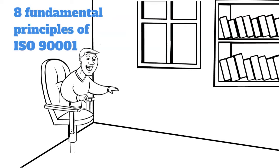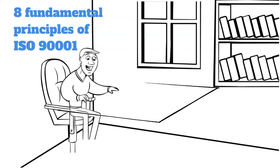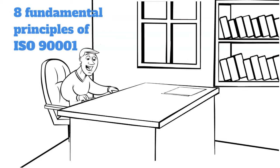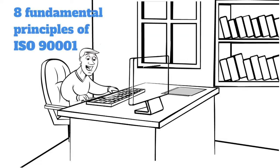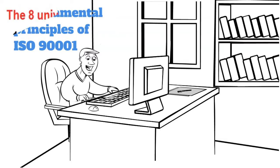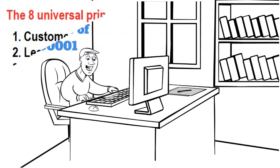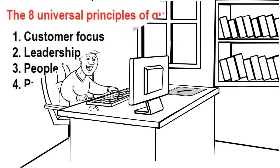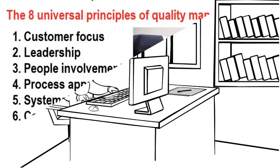We're talking first about customer focus. Number two, leadership. Three, people involvement. Number four, process approach. Five, systematic approach.